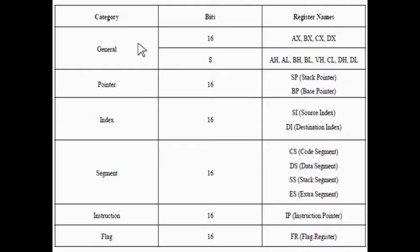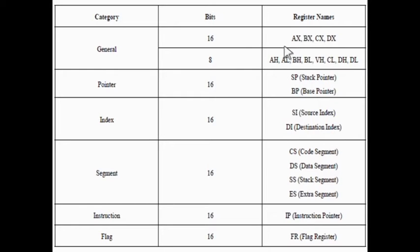General purpose registers are AX, BX, CX and DX, where AX is the accumulator register, BX is the base address register, CX is the counter register, and DX is the data register. Each of these registers is 16 bits. These four registers are available to the programmer, and each general purpose register is divided into two parts.